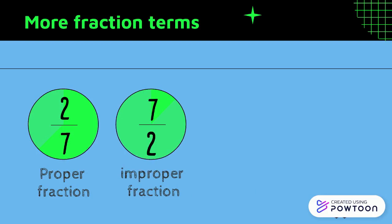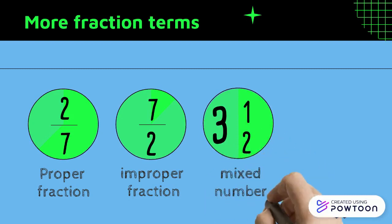An improper fraction actually means if you simplify, you'll get a mixed number, which actually happens to be our next one. A mixed number has a whole number and a proper fraction together.